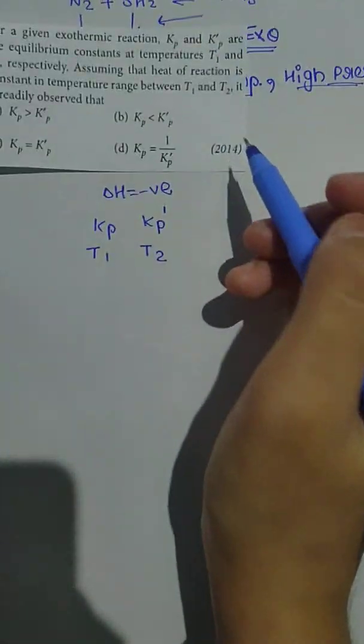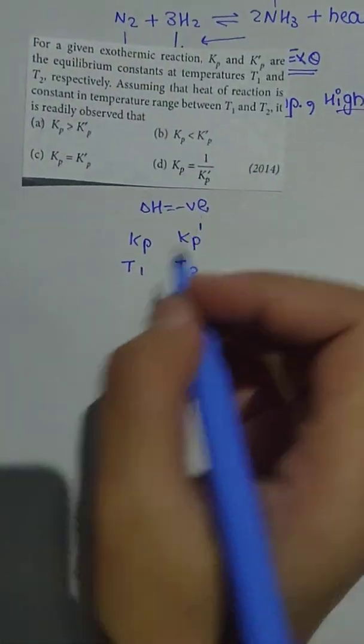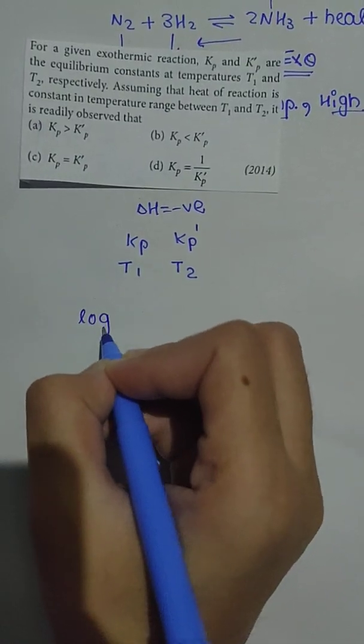At constant temperature, it is readily observed that, as we had learned in our Arrhenius equation, log of k2 upon k1...